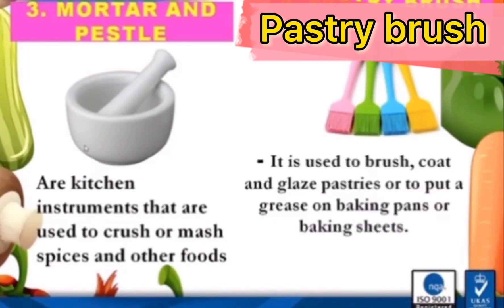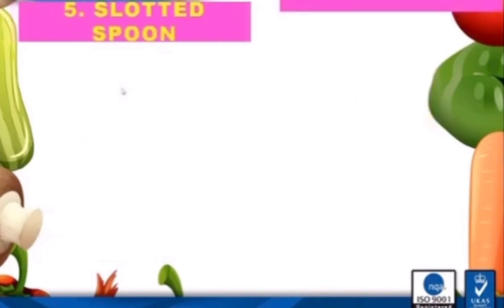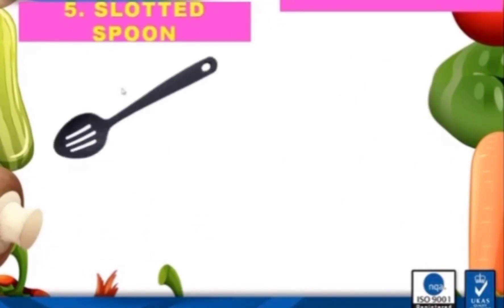Number four is a pastry brush. This is the picture of a pastry brush. It is used to brush, coat, and glaze pastry, or to apply grease on baking pans or baking sheets. A pastry brush is a kitchen tool intended for use with pastry.